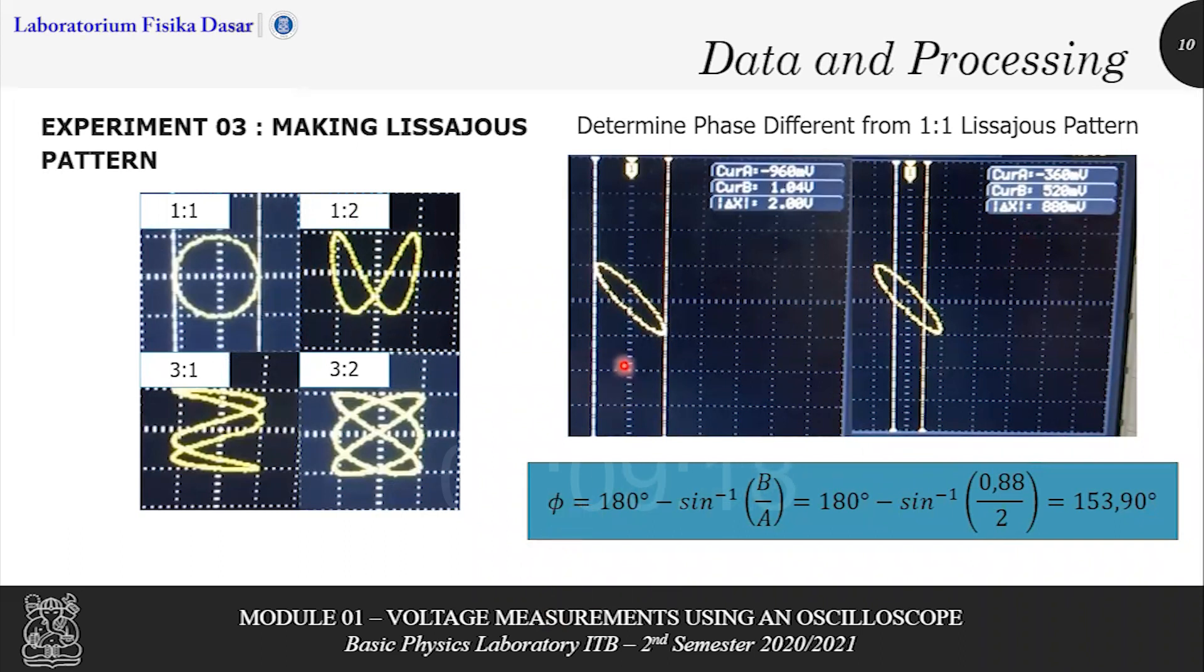Because the Lissajous pattern is tilted to the left, we use the second equation, 180 degrees minus arc sine B per A. And the result is 153.93 degrees.